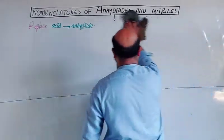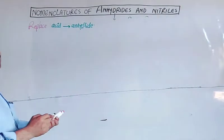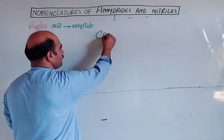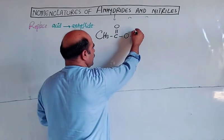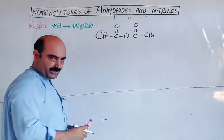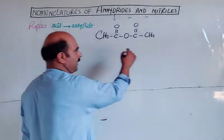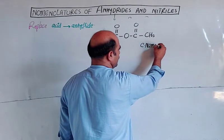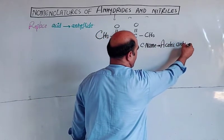The first example is CH3-C(=O)-O-C(=O)-CH3. The common name is acetic anhydride, because we replace 'acid' with 'anhydride' in acetic acid.